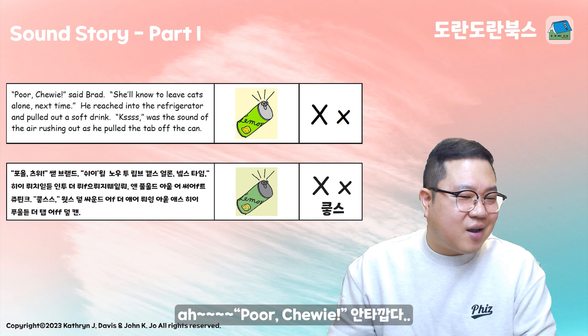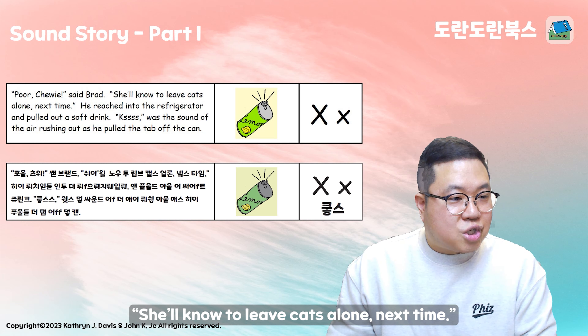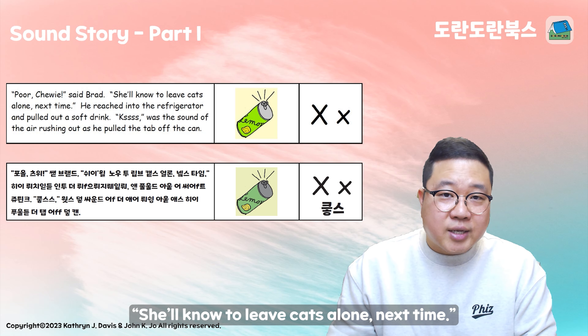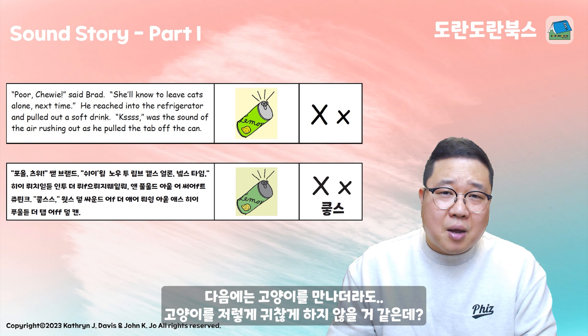Let's look at the words. Poor Chewy, said Brad. Brad's saying poor Chewy — 안타깝다 (how unfortunate). She will know to leave cats alone next time. 다음에는 고양이를 귀찮게 하지 않을 것 같아요. Leave alone — 내버려 두다 라는 의미가 되겠네요 (means to leave alone).